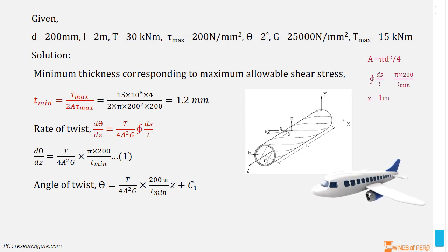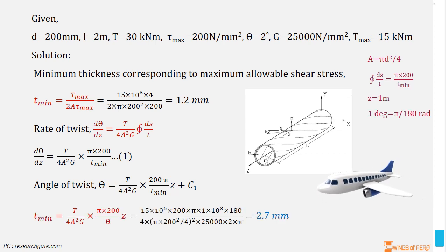From this, we can solve for minimum thickness. The maximum angle of twist occurs at the mid span of the beam, where Z is equal to 1 meter. Now, solving this equation with appropriate values, the minimum allowable thickness that satisfies both conditions is therefore 2.7 millimeter.